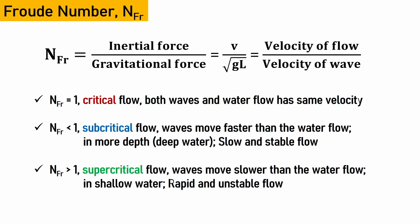When the Froude number equals one, we define it as critical flow — the water flowing in the ocean and the waves on the surface have the same velocity. When the Froude number is less than one, there is subcritical flow, meaning the waves move faster than the water flow — this is typically seen in the middle of the ocean where waves are slow and stable. When the Froude number exceeds one, we observe supercritical flow, where the waves move slower and the rest of the ocean moves faster; this occurs in shallow water near the shore, with unstable, turbulent, and rapid waves.